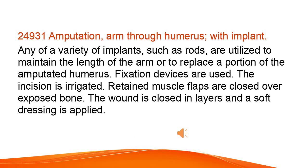Amputation of the arm through the humerus with implant. Any of a variety of implants, such as rods, are utilized to maintain the length of the arm or to replace a portion of the amputated humerus. Fixation devices are used. The incision is irrigated. Retained muscle flaps are closed over exposed bone. The wound is closed in layers and a soft dressing is applied.